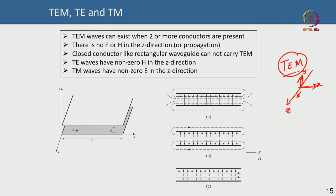There is no electric or magnetic field along the direction of propagation because propagation is perpendicular to the field oscillations. This transverse electromagnetic wave can occur only when you have at least two conductors. The oscillating electric field gives you the voltage and the oscillating magnetic field gives you the current. You need two conductors such that these oscillating fields reinforce each other and propagate along the z direction.